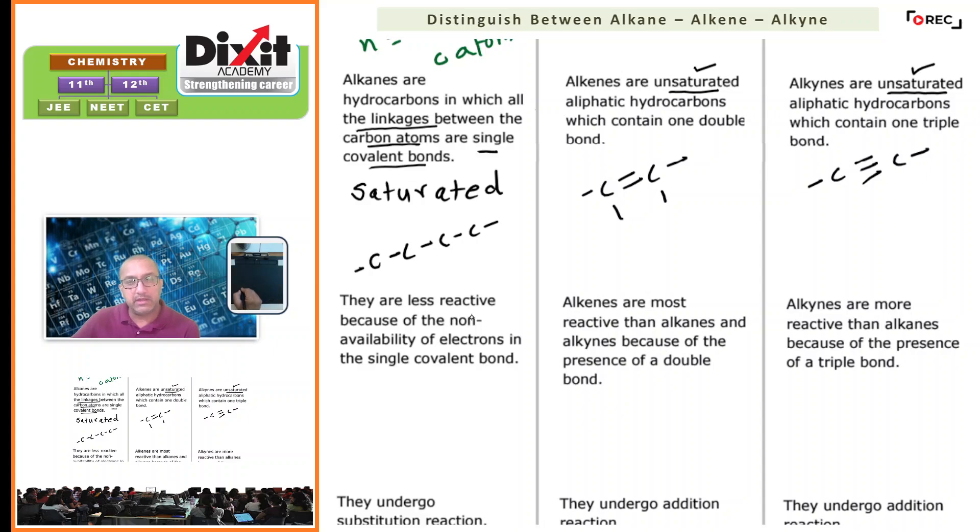Regarding reactivity, alkanes are less reactive because of the non-availability of electrons in the single covalent bond. Now, if we take an example of an alkane, let's take the example of ethane.